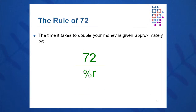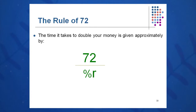It allows us to calculate the rate at which we can double our money over a certain period of time, or the time over which we can double our money at a certain fixed rate. Again, it's an approximation — one you can do without any calculator. You can do it in your head.